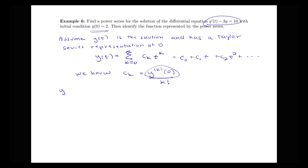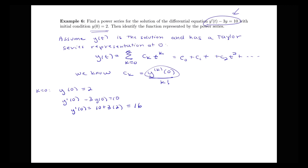We know y(0) equals 2, so that gives us what happens for k equals 0. For k equals 1, notice that y'(0) minus 3 times y(0) equals 10, just taking the given differential equation. So y'(0) equals 10 plus 3 times y(0). Since y(0) equals 2, that's 10 plus 6, giving us 16 for y'(0).